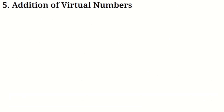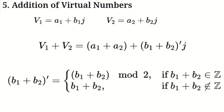Addition of virtual numbers. Next, let's talk about how to add virtual numbers. When you add two virtual numbers, you add their real components just like you would with normal numbers. But for the virtual coefficients, you add them together first. Then, if the sum of the virtual coefficients is an integer, you apply the coefficient rule. If it's not an integer, it stays as it is. So the result is a new virtual number with the summed real part and the processed virtual coefficient.